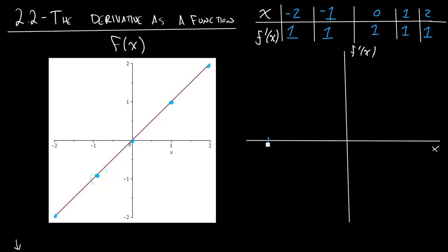And so if I plot these points that I have here, negative 2, negative 1, 0, 1, and 2, I'm going to see that an input of negative 2 gives me an output of 1. My slope there is 1. An input of negative 1 gives me an output of 1. My slope is still 1 there. And at all these other inputs, my slope is still 1. And so we can see that the graph of my derivative is actually going to look like a straight line here.